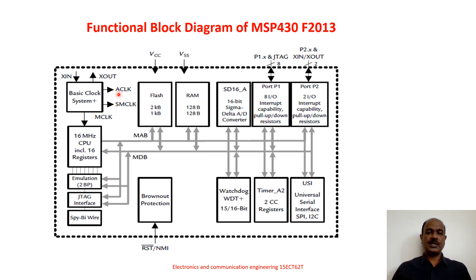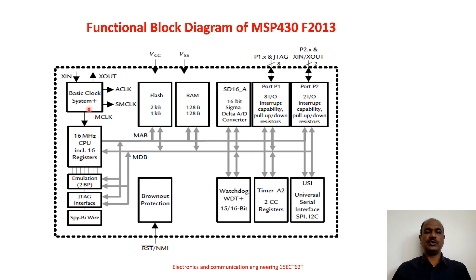ACLK and SMCLK will be used by the peripherals for their operation. So these are the three different types of clocks generated internally in the MSP430 series of microcontrollers: MCLK master clock, ACLK auxiliary clock, and SMCLK sub-master clock. MCLK will be used by the processor for its processing.